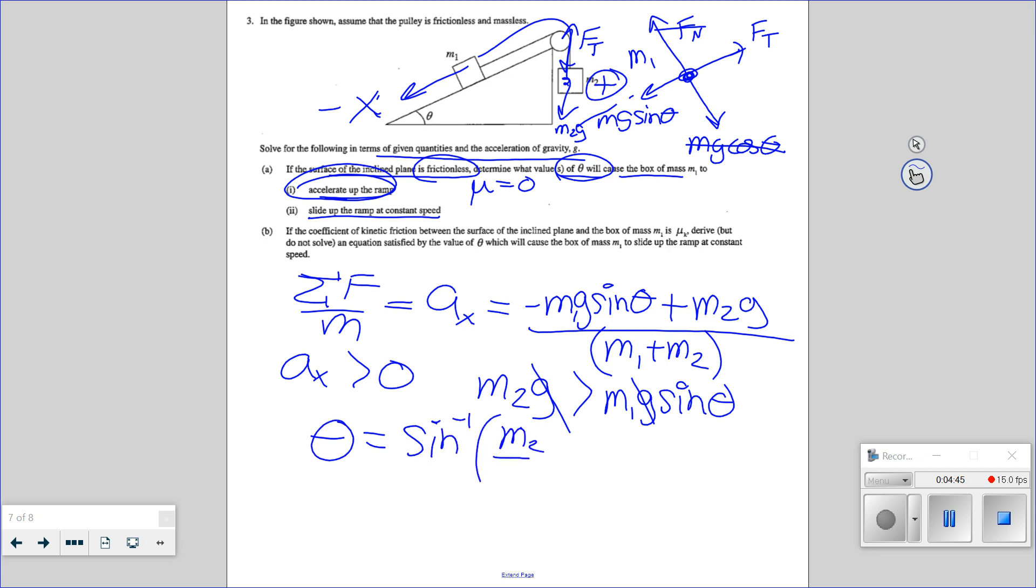And that should make sense, because you can take, that's just going to be a number. Hopefully M2 is less than M1. It's got to be a number up to one. But okay, that's just going to be a number. We can take the inverse sine of it. And that looks good.